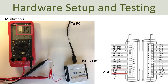Here you see the hardware setup for this analog output example. It will be a very basic example where I output a value to analog output channel zero, and then connect that channel to a multimeter as shown in this image. I should then be able to read the same value on the multimeter that I'm writing in the LabVIEW application.